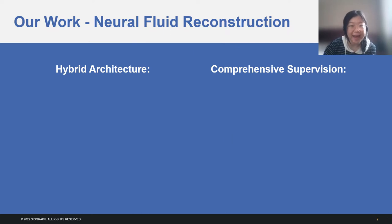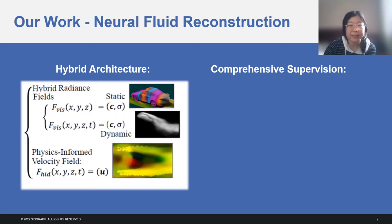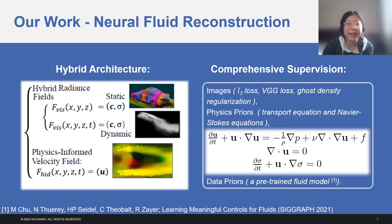Here are more details about our hybrid architecture and comprehensive supervision. On the architecture side, we want to support hybrid scenes with moving fluid and static obstacles. Thus, we propose to use two fully connected networks to represent the radiance fields. One network represents the static components without time as input, and the other one has time t as input and learns the time-varying radiance for dynamic components. The advantage of such hybrid architecture is that the model can separate static and dynamic components automatically without additional human labeling or obstacle geometry as input. For the velocity model, we only sample and supervise at positions that are not occupied by any static density.